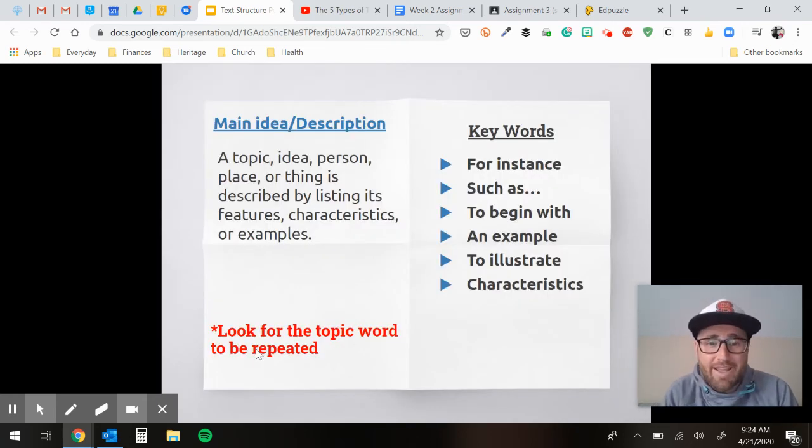And then the main idea and description. This is what you've kind of been reading about in your articles about the brain science so far. You're reading about a topic, an idea, a person, a place, a thing. It's described by its features and characteristics. So you're going to look for the topic to be repetitive. So if we talked about brains not developing for teenagers, it was mentioned in every paragraph and a different thing was described in each paragraph.